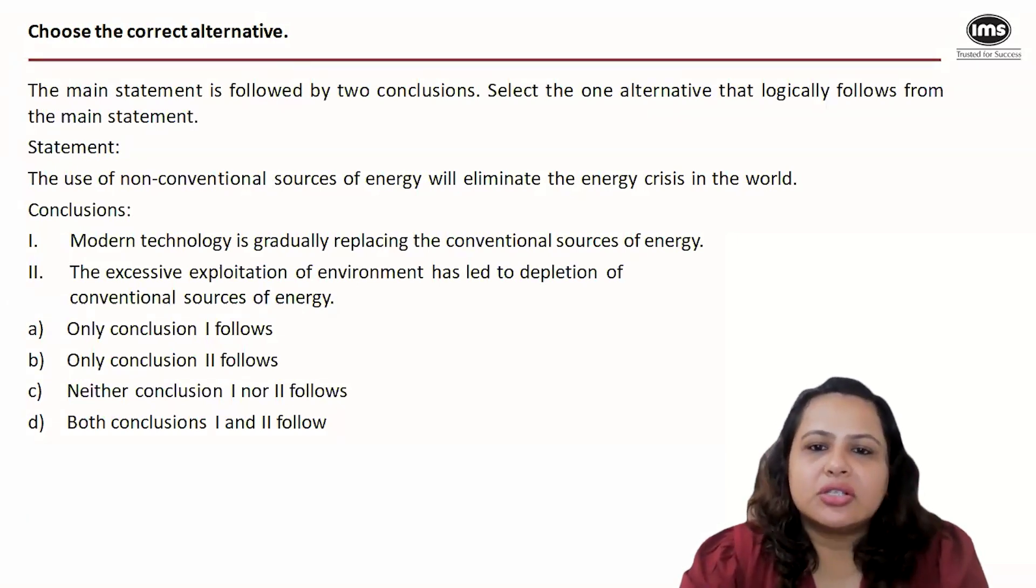This conclusion follows because the statement says that non-conventional sources of energy will eliminate the crisis, which means modern technology is replacing the conventional sources. Conclusion II: Excessive exploitation of environment has led to depletion of conventional sources of energy.